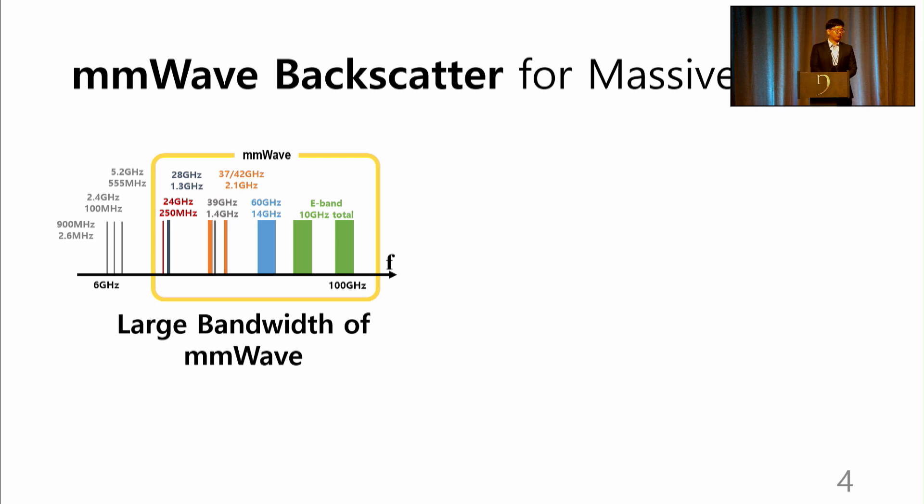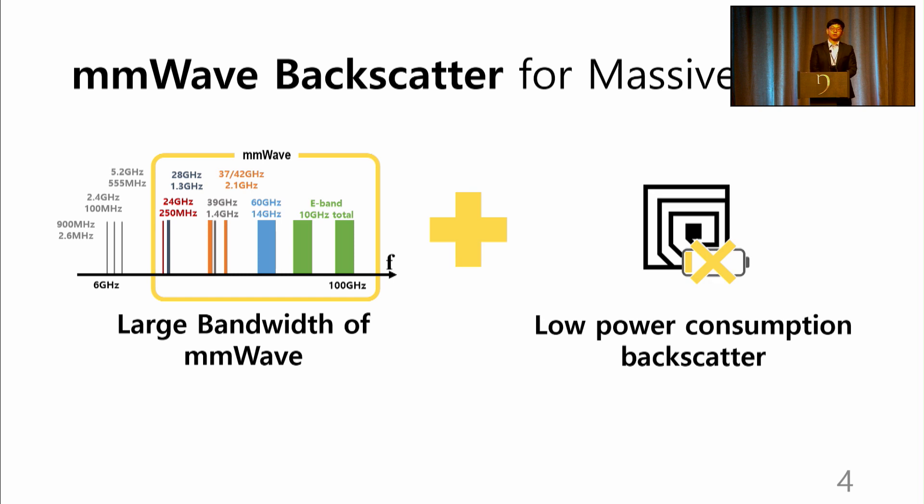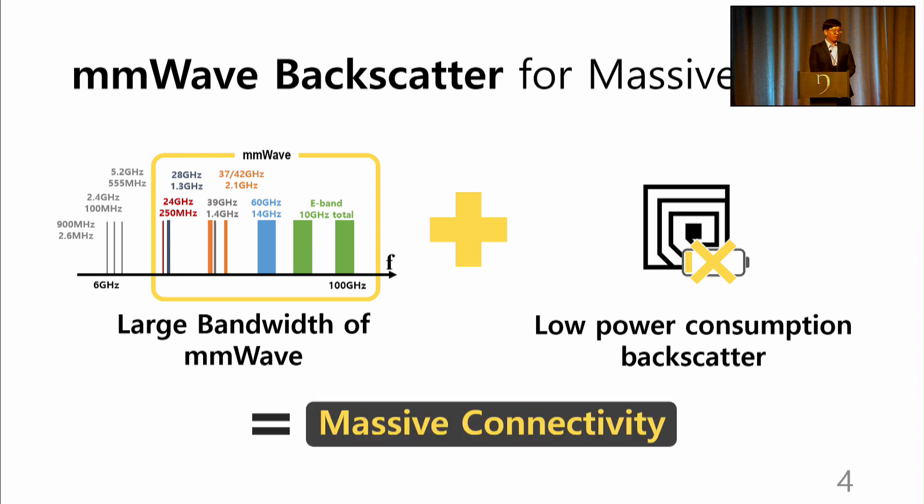Millimeter wave backscatter is an attractive solution for massive connectivity. Millimeter wave offers over 10 gigahertz of continuous bandwidth, which can support massive capacity. This is more than two orders of magnitude larger than the 900 megahertz or 2.4 gigahertz bands. In addition, backscatter offers ultra-low power operation in tens of microwatts. The scalability from the large bandwidth and the ease of deployment from the backscatter can enable massive connectivity.